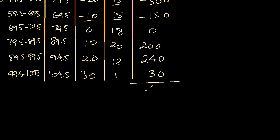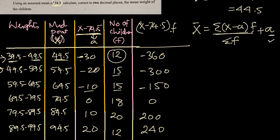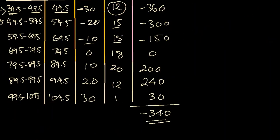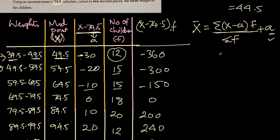It came out to be minus 340. All right. So let's use it here now. Sigma x minus a times f is this. Sigma x minus 74.5 times f is minus 340. So minus 340 divided by sigma f.